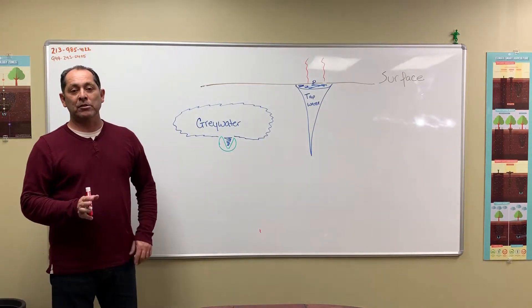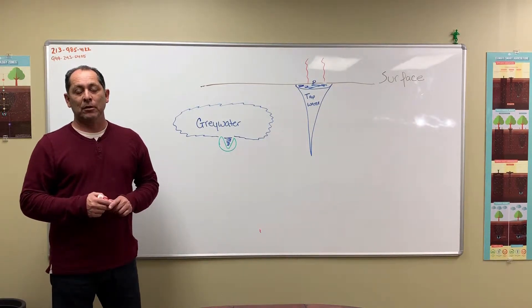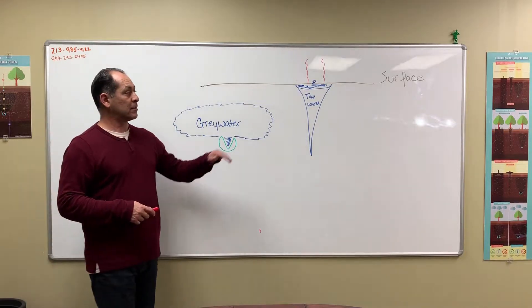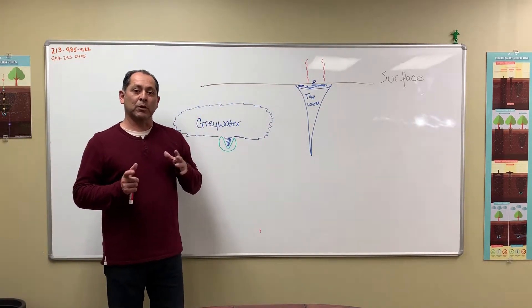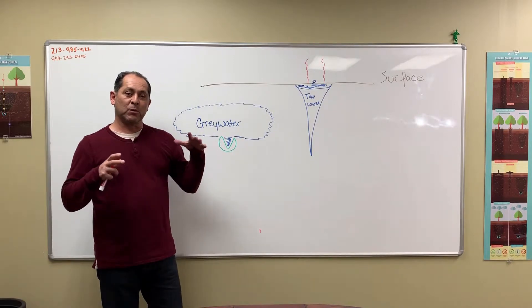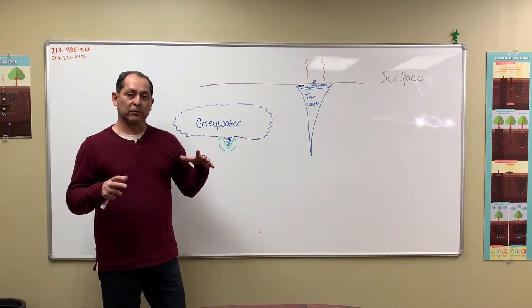Today we're going to talk about drip irrigation versus gray water irrigation. With drip irrigation, it sits on the surface or very near the surface. If you ever walk by a drought-tolerant landscape, you'll notice these big round wet spots on the surface.